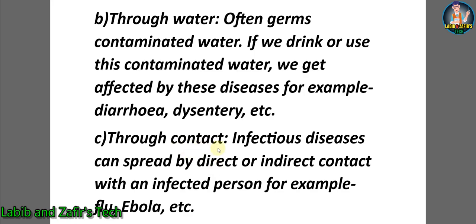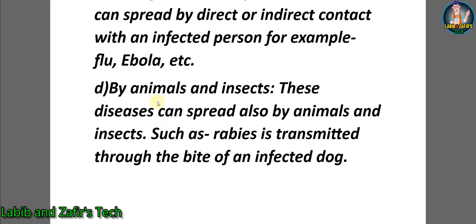C) Through contact — infectious diseases can spread by direct or indirect contact with an infected person, for example flu, Ebola, etc. D) By animals and insects — diseases can also spread by animals and insects; for example, rabies is transmitted through the bite of an infected dog.